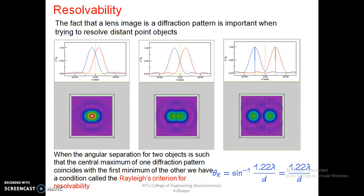With optical instruments like prisms, telescopes, or diffraction gratings, we can separate images. With white light and a diffraction grating, different colors are diffracted at different angles and separated in the form of spectral lines. Resolving power of any optical instrument is defined as the ability to separate the two images of closely spaced objects.